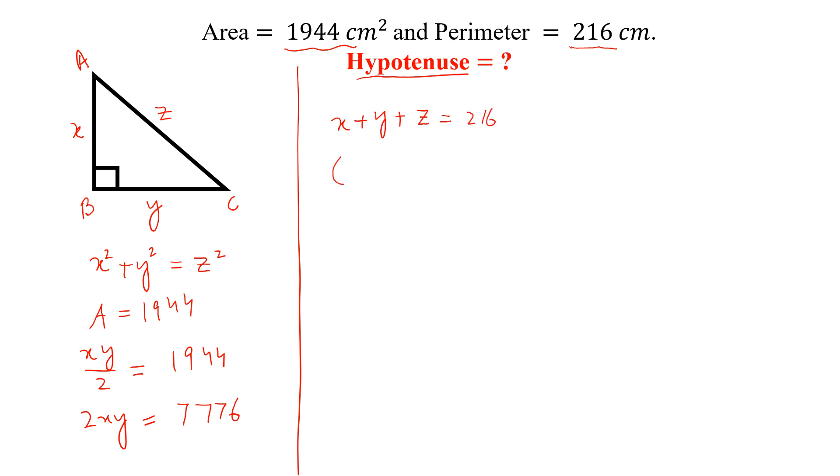Now we can write this is x plus y is equal to 216 minus z. And taking whole square on both sides.